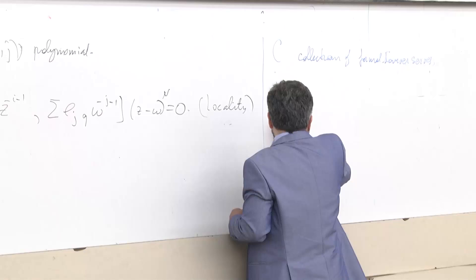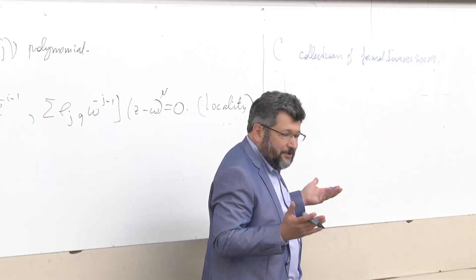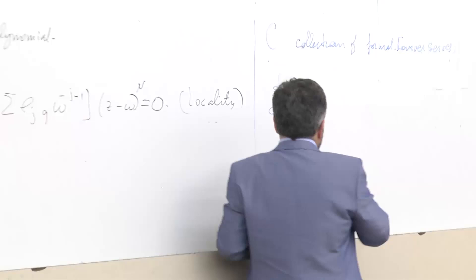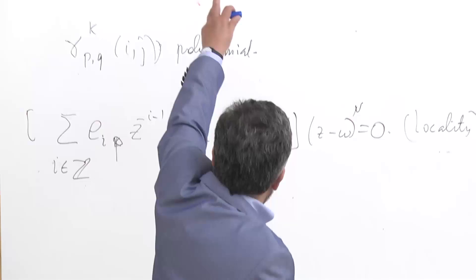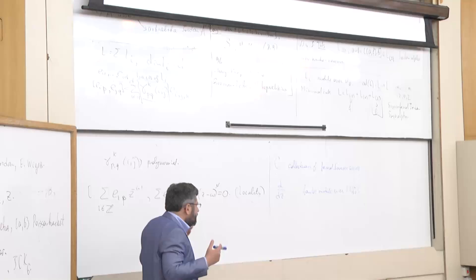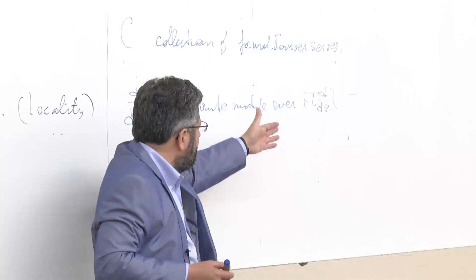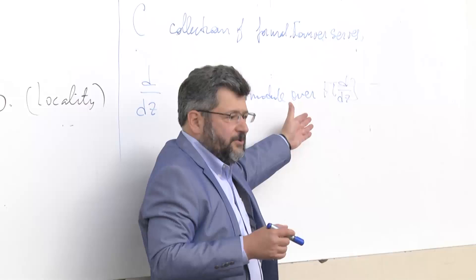A conformal algebra is a collection of infinite formal Fourier series with the condition that for any two elements they are pairwise local — so the locality axiom holds. There is one linear operator that acts on it: differentiation. So it is a module over polynomials. For a classification, the first assumption was that it is a finite module over polynomials. Simple conformal algebras with this property were classified; this finiteness means that the dimensions of all Li's are bounded. It is a very difficult but beautiful work, and the key idea is that you can view these infinite-dimensional objects as almost finite-dimensional polynomials.